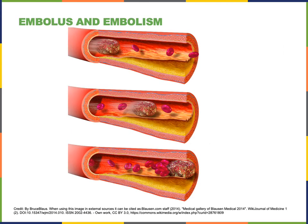If a thrombus breaks loose and starts to travel in the blood, it is called an embolus. An embolus is dangerous because a blood clot traveling through the circulation can become lodged in a small blood vessel and block blood flow to a tissue, which is known as an embolism. If an embolism blocks a coronary artery, it could cause a heart attack; if it blocks an artery supplying blood to the brain, it could cause a stroke.